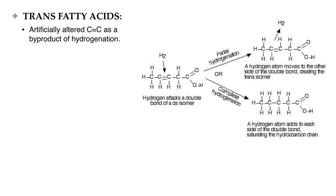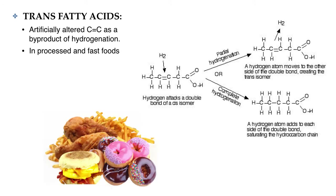A little bit of trans fats can be found naturally in some animal fats like beef or dairy. But the concern has always been the addition of trans fats into processed foods and fast foods that started in the 1950s, and the problem was the use of hydrogenated oils. Hydrogenation is the process by which unsaturated fatty acids are converted to saturated fats by adding hydrogen atoms to the fats.